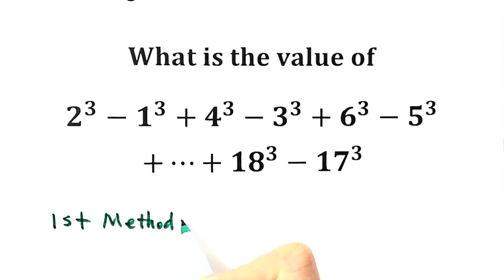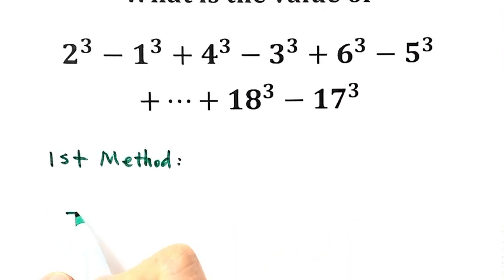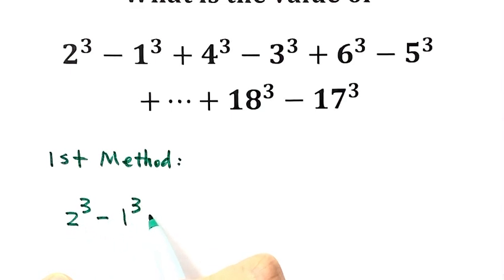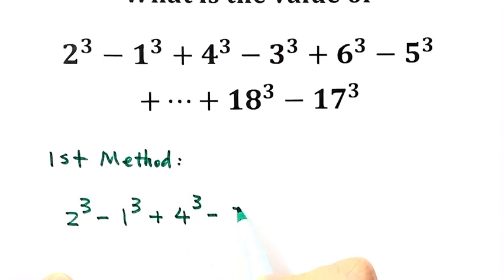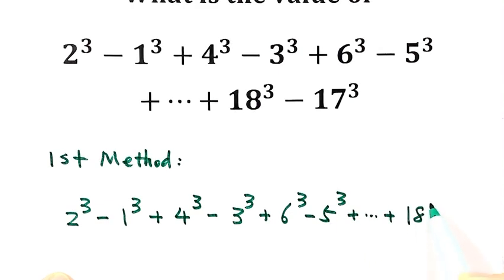Let's start from this expression: 2 cubed minus 1 cubed, plus 4 cubed minus 3 cubed, plus 6 cubed minus 5 cubed, and so on, up to 18 cubed minus 17 cubed. First, we can rewrite the expression.